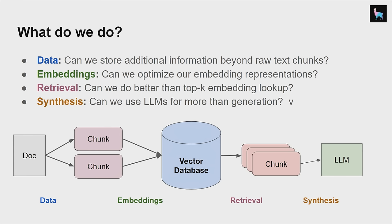Can you optimize the embedding representation itself? A lot of times when you're using a pre-trained embedding model, it's not really optimal for giving you the best performance. There's also the retrieval algorithm — the default thing you do is just look up the top-K most similar elements from your vector database to return to the LLM. Many times that's not enough. What are both the simple things you can do as well as the harder things?